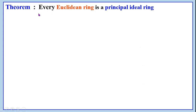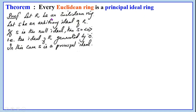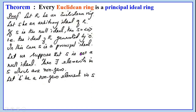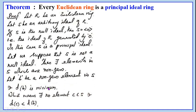We shall now prove that every Euclidean ring is a principal ideal ring. Proof: Let R be a Euclidean ring and let S be an arbitrary ideal of R. We have to show that S is a principal ideal. If S is the null ideal, then S is generated by the zero element 0, that is S equals the ideal generated by 0, so S is a principal ideal. Suppose S is not a null ideal. Then there exist non-zero elements in S. Let B be a non-zero element in S such that D(B) is minimum.